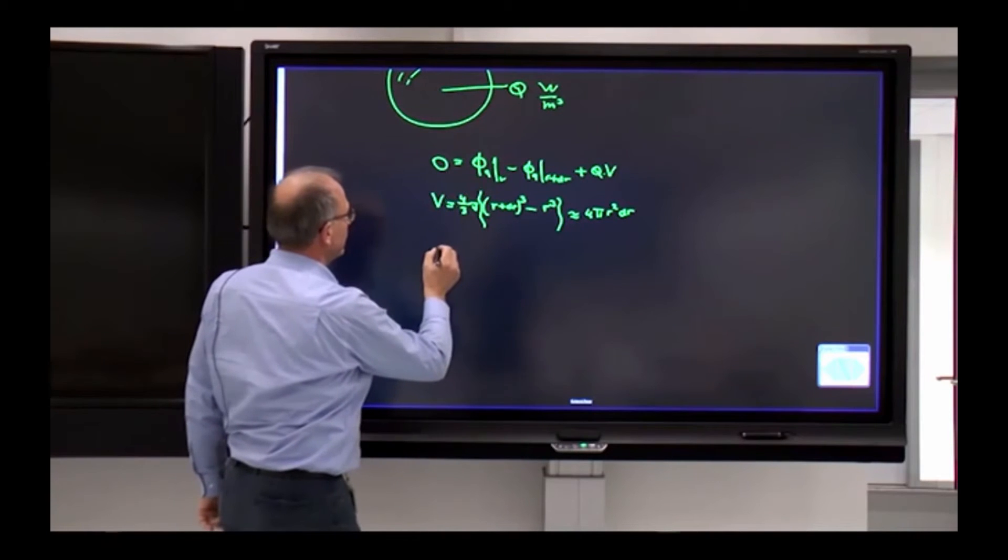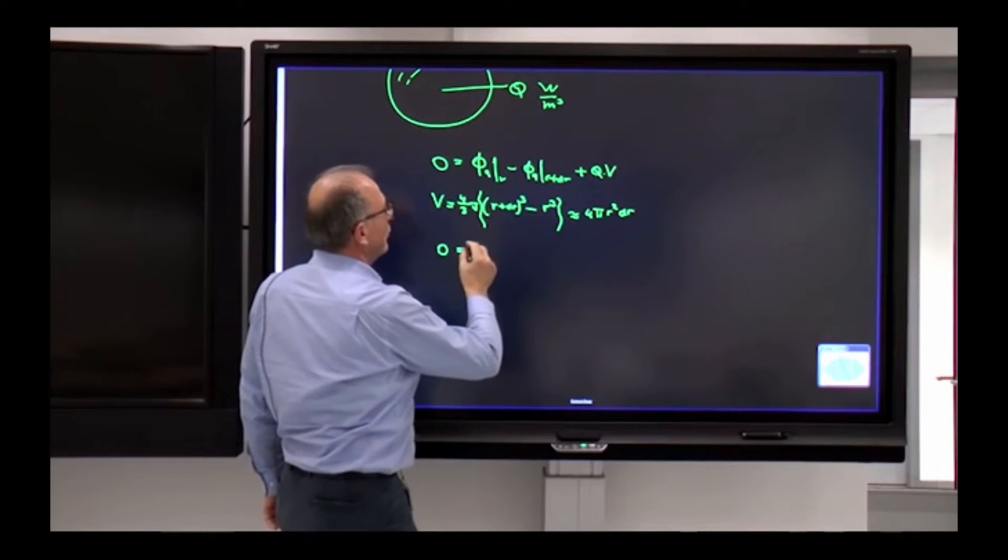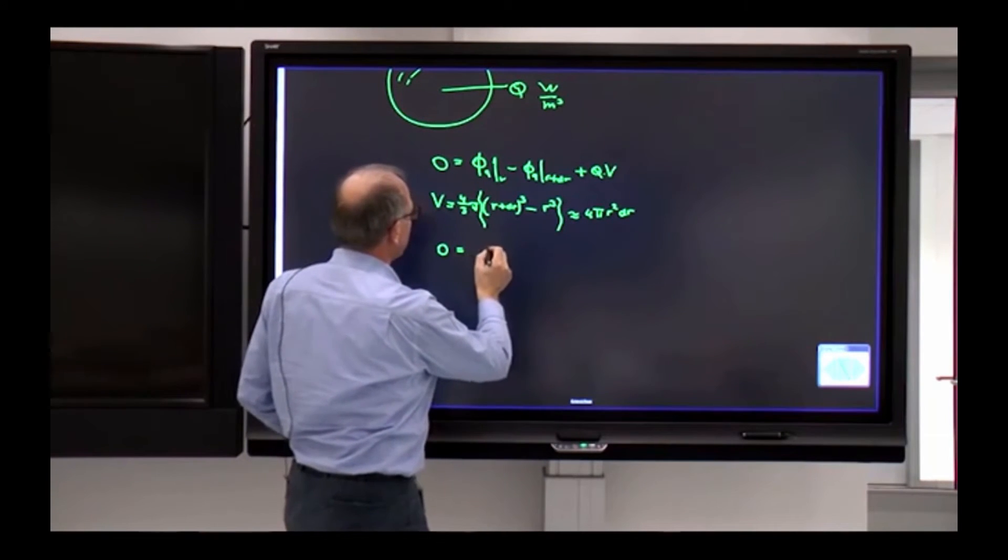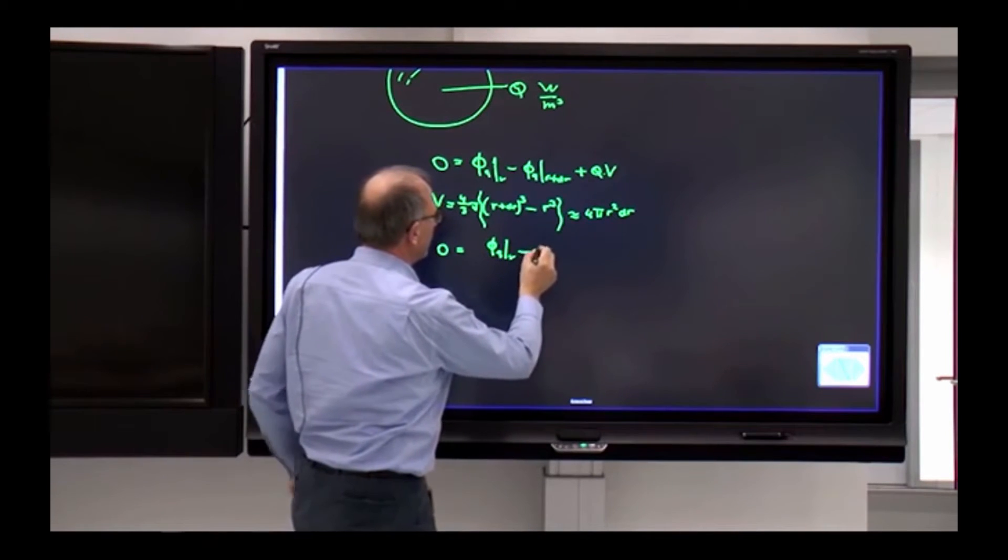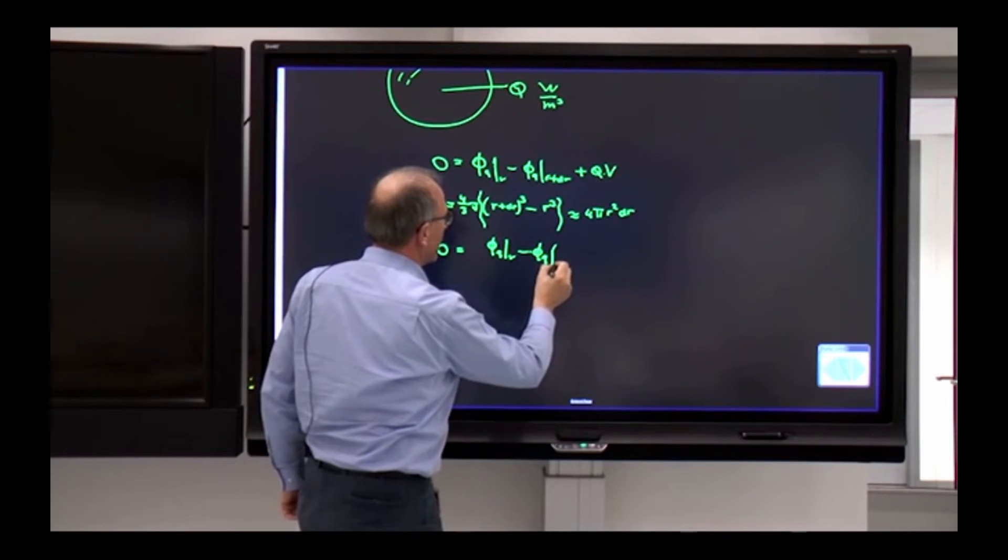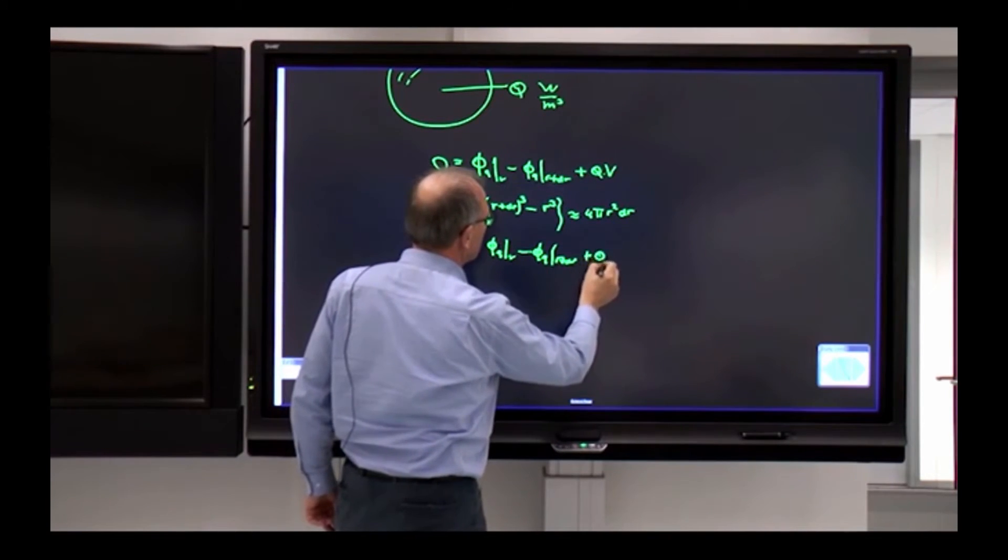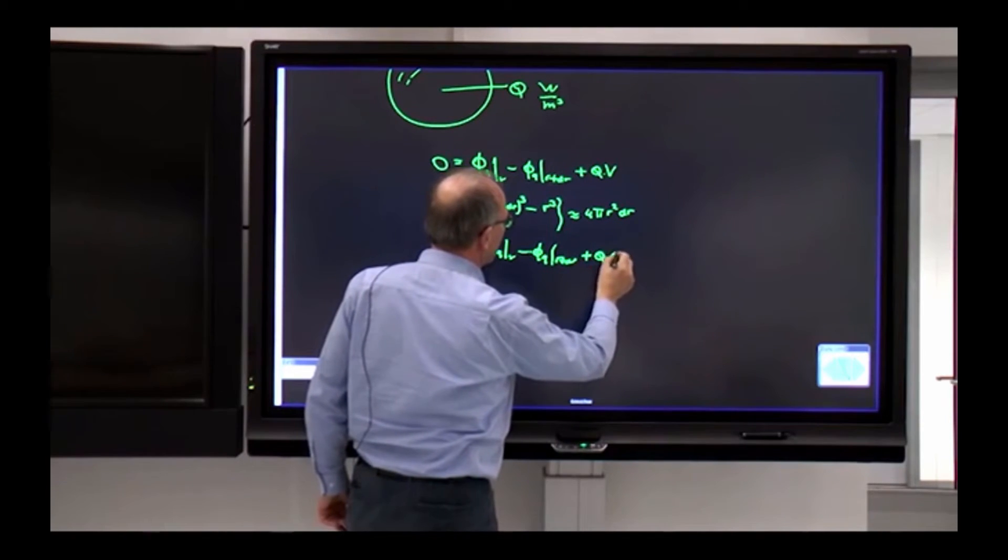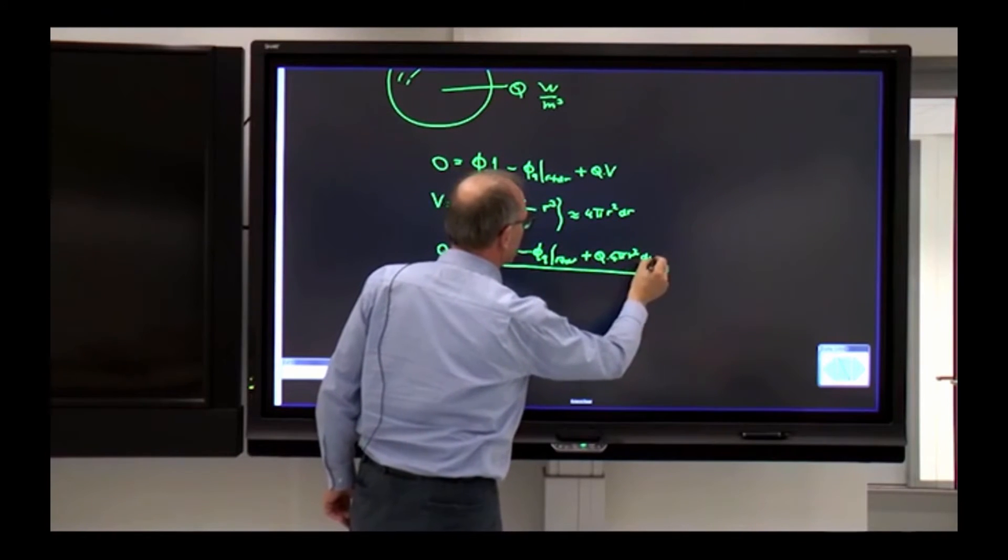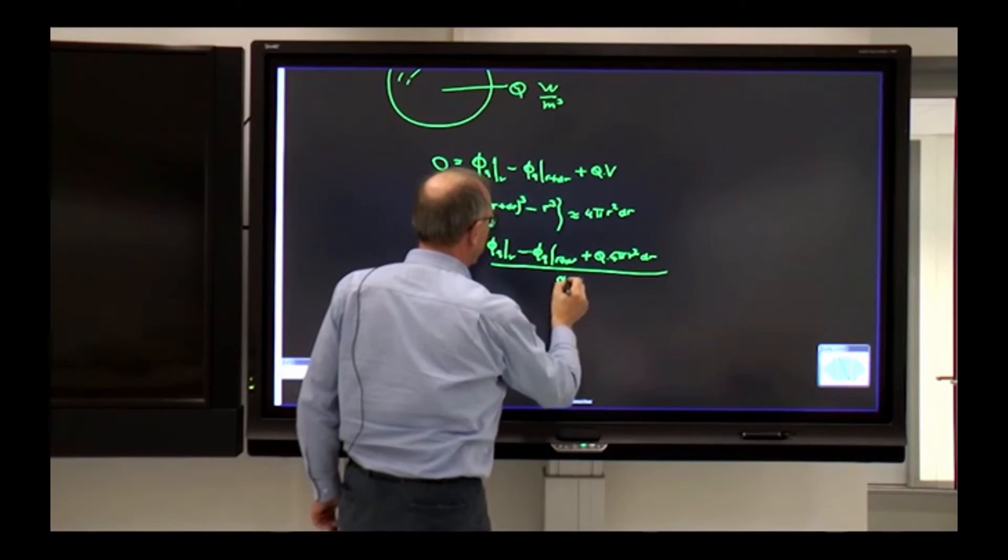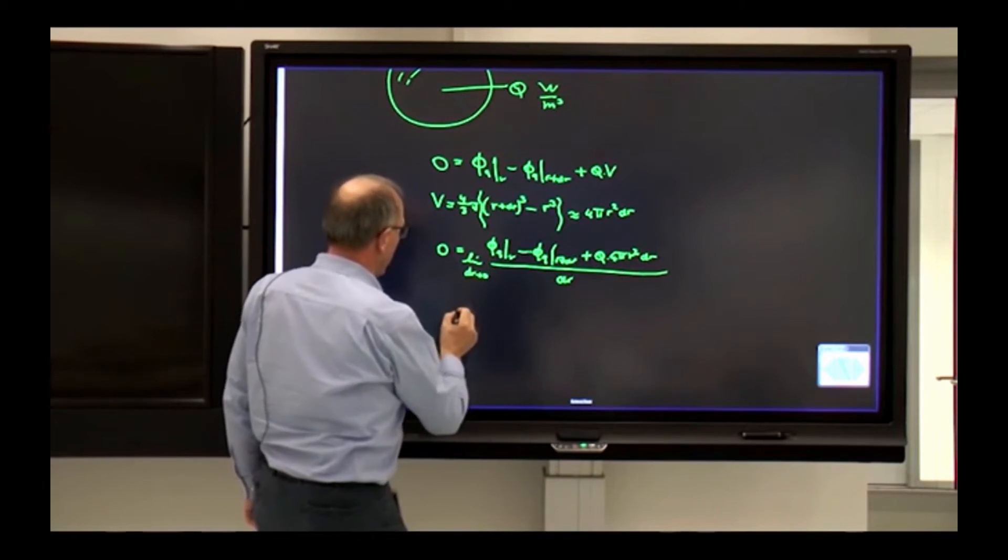And even similar in this case. So what we will do is we get 0 is, well, we divide by dr, so what we get is phi q on the place r minus phi q on the place r plus dr plus q multiplied by 4 pi r squared.